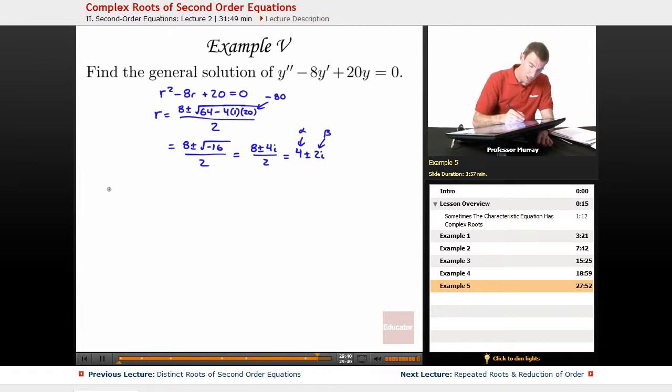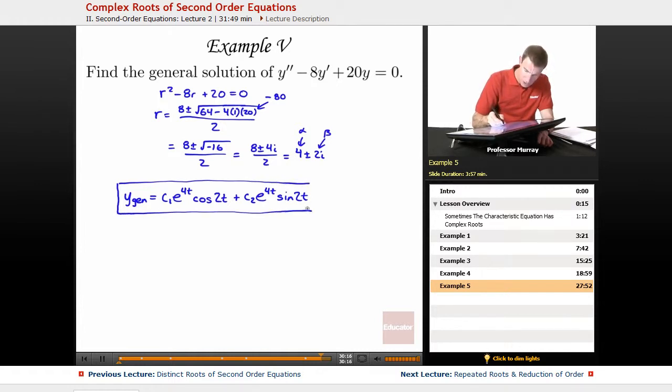So my general solution is c1 e to the alpha t, alpha is 4, times cosine of beta t, beta is 2, plus c2 e to the alpha t, times sine of beta t. And since I don't have any initial conditions on this one, I'm going to stop there and just say my general solution is the last word for this example.